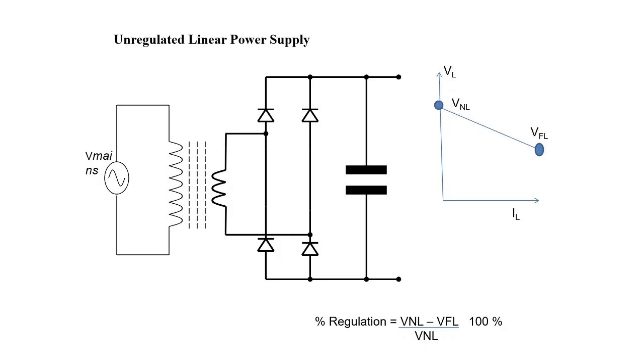One of the performance factors of this unregulated power supply or regulated power supply is percentage load regulation, which is given as V no load minus V full load divided by V no load voltage multiplied by 100%. Here, no load means a load which does not draw any current from the unregulated power supply, and full load means a load which will draw a rated current from the unregulated power supply.